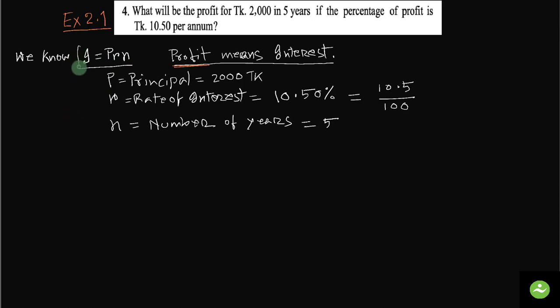I equals to PRN. This is the formula. Here, P is principal, 2000 Taka, given in the question. R is rate of interest, 10.50 percent, also given in the question. N is number of years, which is 5. So we get P, we get R, we get N from the question.